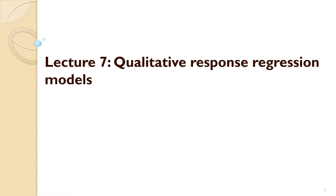In this lecture, I wanted to talk about qualitative response regression models. That's the official name, but actually a better name would be probability regression models, because in contrast to the previous lectures, the Y variable you're interested in is best interpreted as a probability. It's all about how the probability of a certain event happening depends on a certain set of X variables. And because these are probabilities rather than measurements, this makes a big difference.